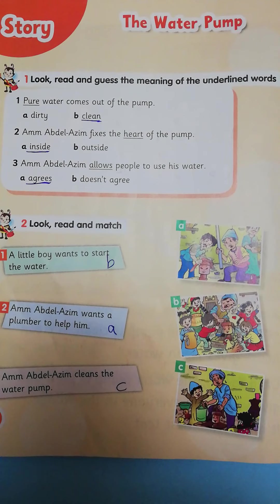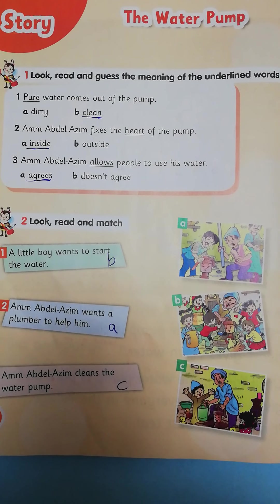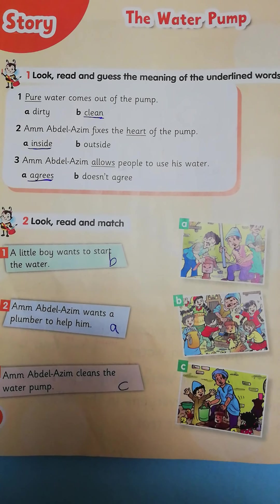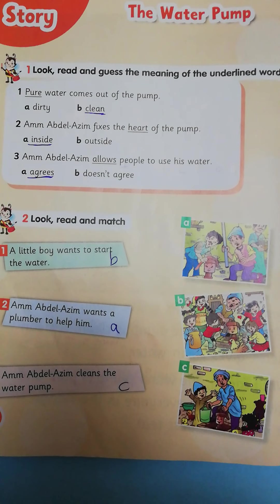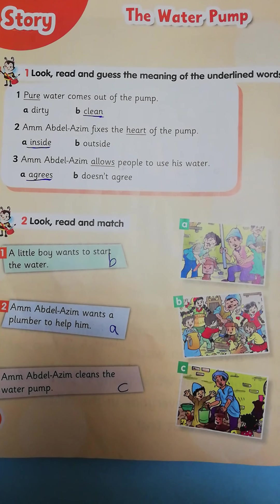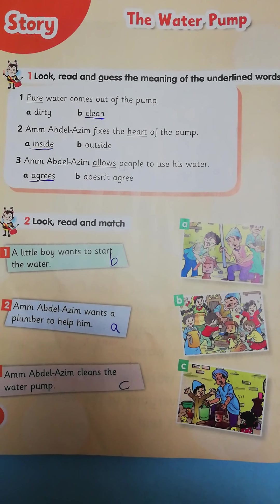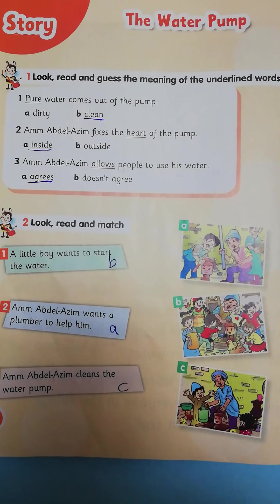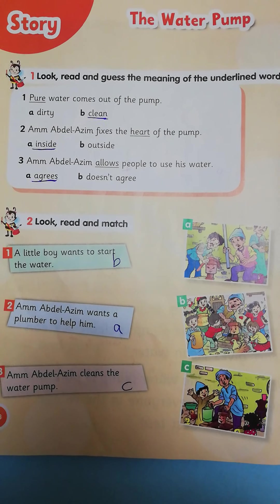Number 3. Am Abdul Azim allows people to use his water. A. Agrees. B. Doesn't agree. What's the meaning of 'allows'? The right answer is A. Agrees. Correct.